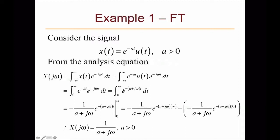The integral of these terms equals minus 1 over (a + jω) times e^(-(a+jω)t), substituting the values of t from 0 to infinity. We have e^(-∞) equaling 0, and e^0 equaling 1. Since the upper limit term is 0, we would have only 1 over (a + jω) as the spectrum of this signal, where a > 0.